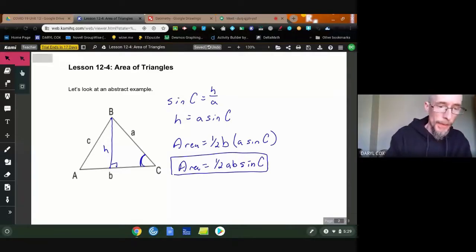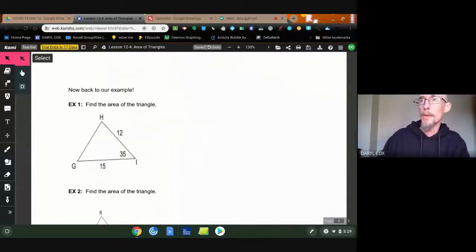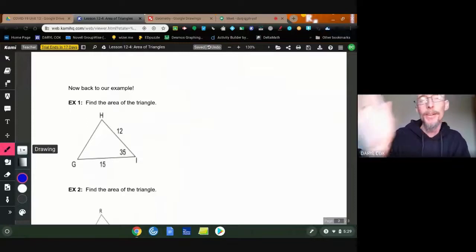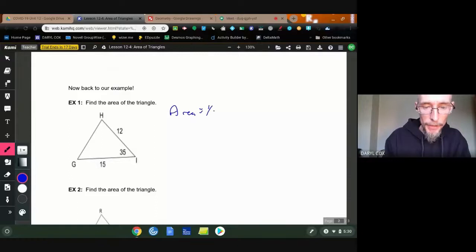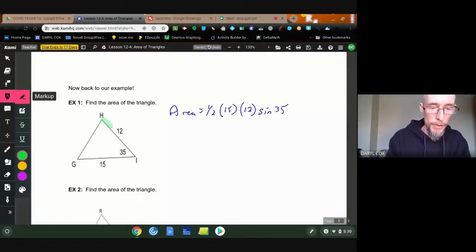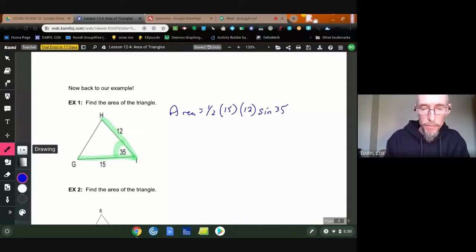So if I know that kind of information, we can go right back to this original problem. And I can say, you know what? I don't even need to go through all that finding the height. Because I know now that my area is one half the base of the triangle times the other side times the sine of 35. Basically what I need is two sides and the angle between it. And I can find my area.